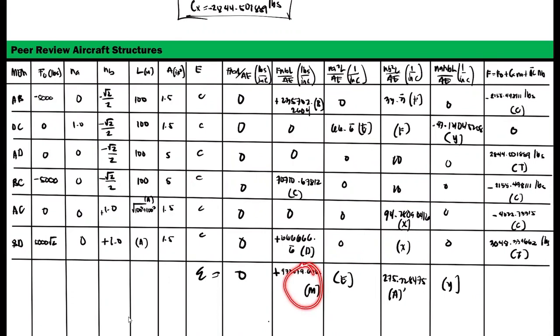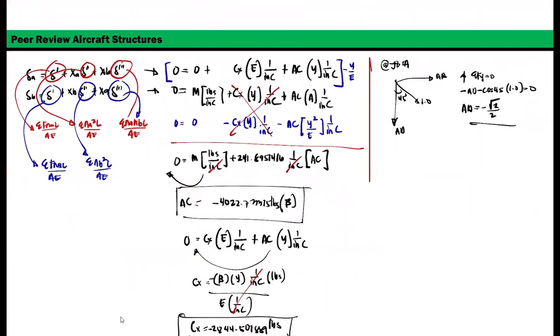And then NA squared L over AE is store E, NB squared L over AE is store A, and then NA, NBL over AE is store function Y. Okay.